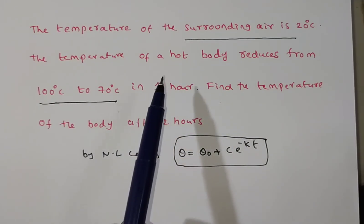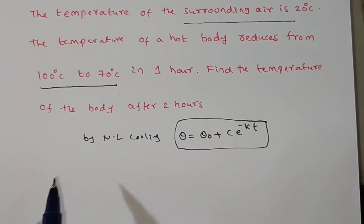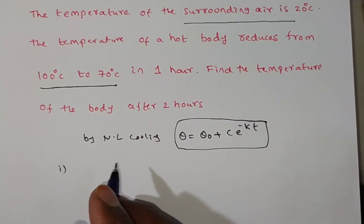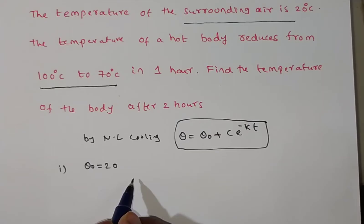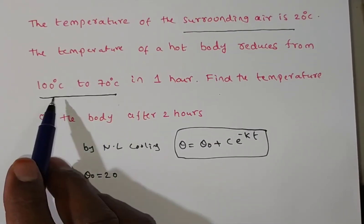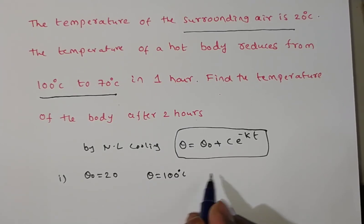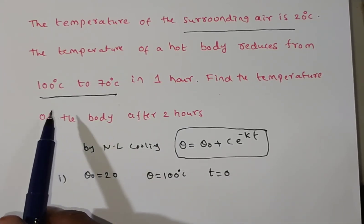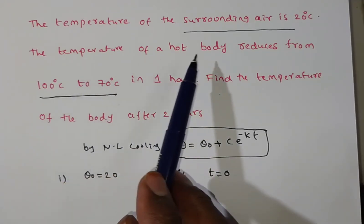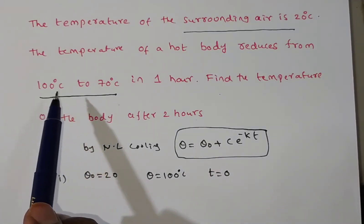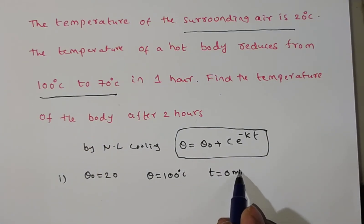First, let's write the given data. The surrounding temperature theta naught is equal to 20 — this is constant and won't change. Initially, that is at T equal to 0 hours, the temperature of the hot body is 100 degree centigrade, since the body reduces from 100. So at T equal to 0, the temperature is 100 degree centigrade.